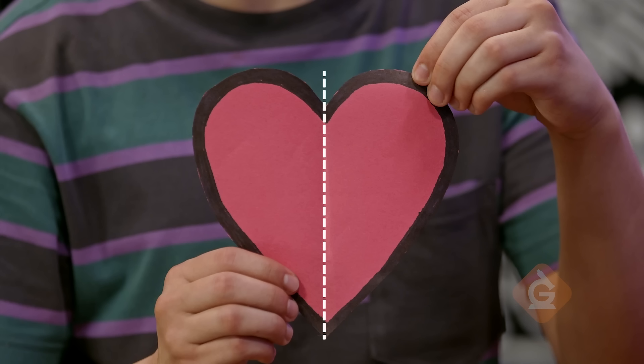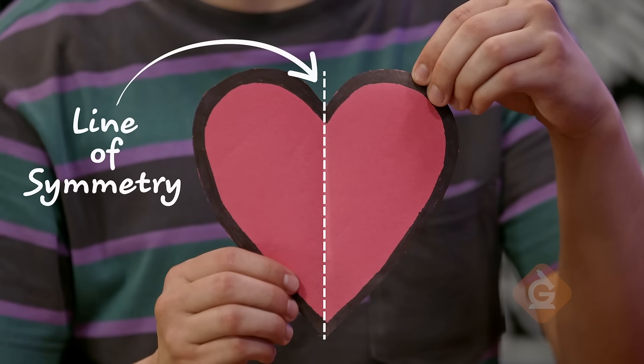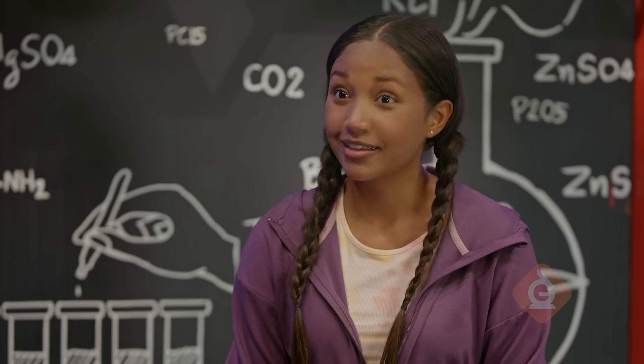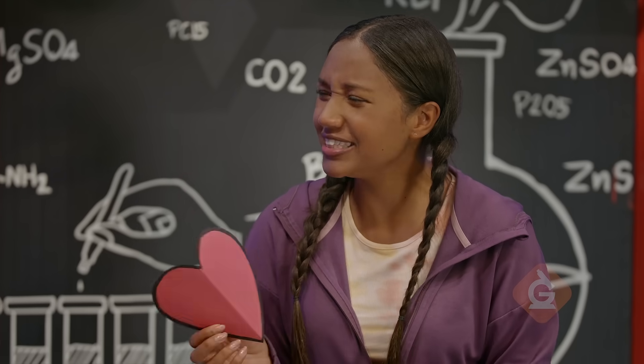The line that divides the shape is called the line of symmetry. Does this just happen with shapes? Actually, you can find symmetry all around us. Really? How can we see that?